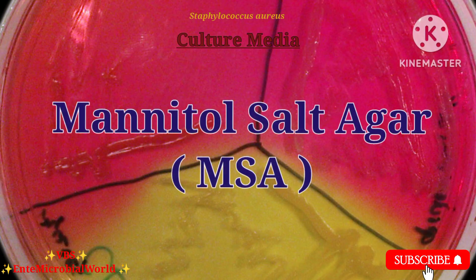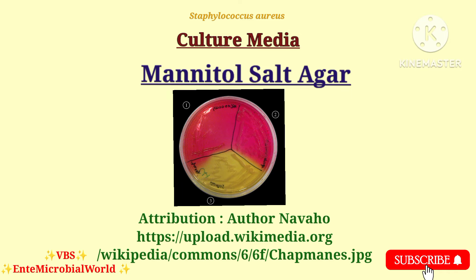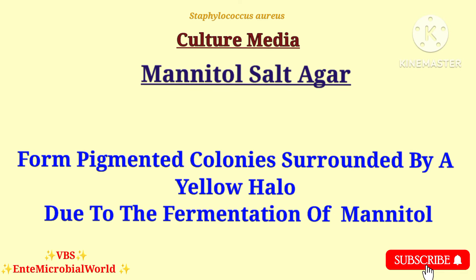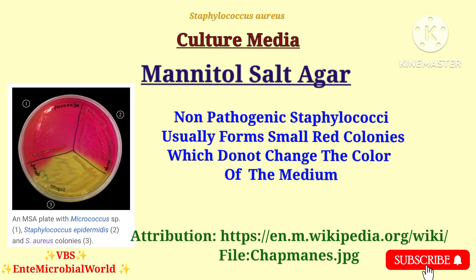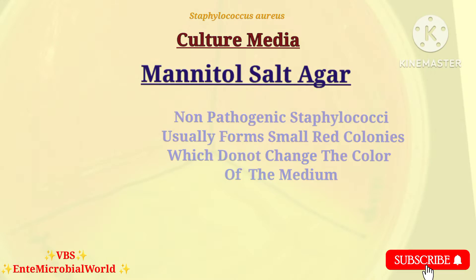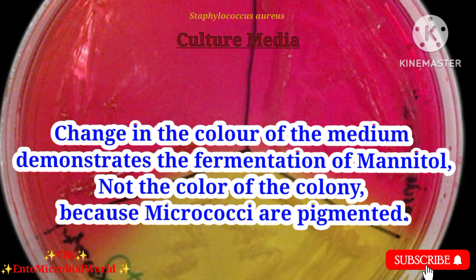Next is mannitol salt agar. Staphylococcus aureus forms pigmented colonies surrounded by a yellow halo due to the fermentation of mannitol. Non-pathogenic Staphylococci usually form small red colonies which do not change the color of the medium. An important point: the change in the color of the medium demonstrates fermentation of mannitol, not the color of the colony, because micrococci are pigmented.